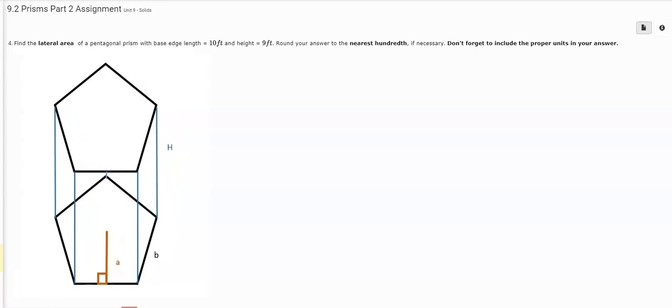We are trying to find the lateral area of this pentagonal prism. Each side length is equal to 10 and the height of the whole entire thing is 9.